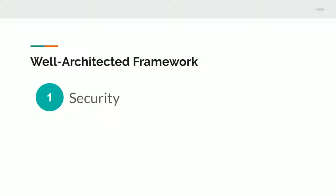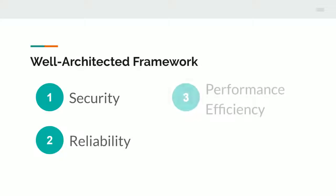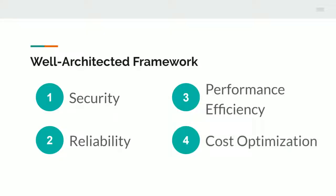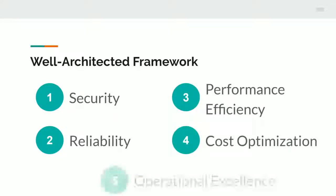There are five pillars of the well-architected framework. The first one is security, second is reliability, then performance efficiency, cost optimization, and operational excellence. I will break down each of these five pillars in the subsequent five videos, so stick around and enjoy.